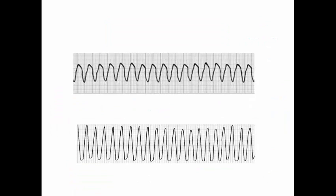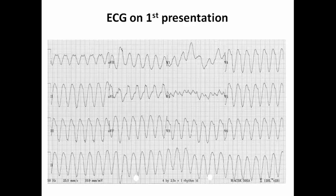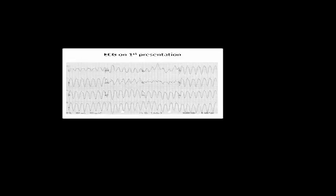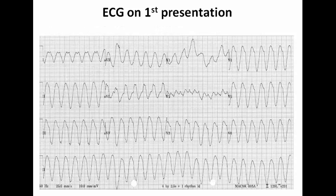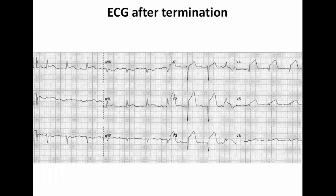Polymorphic VT can occur with normal or prolonged QT interval — the latter is called Torsades de Pointes. This ECG shows a patient with regular wide-complex tachycardia — monomorphic VT — who presented with dizziness and near-syncope. After DC shock terminated the VT, the follow-up ECG revealed extensive anterior STEMI. This emphasizes recording an ECG during the episode and after termination — the cause here was not scar-related VT or channelopathy but acute anterior STEMI requiring primary PCI.